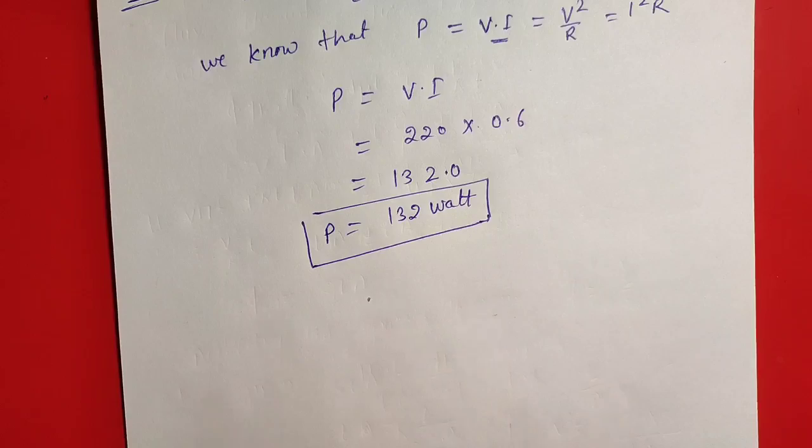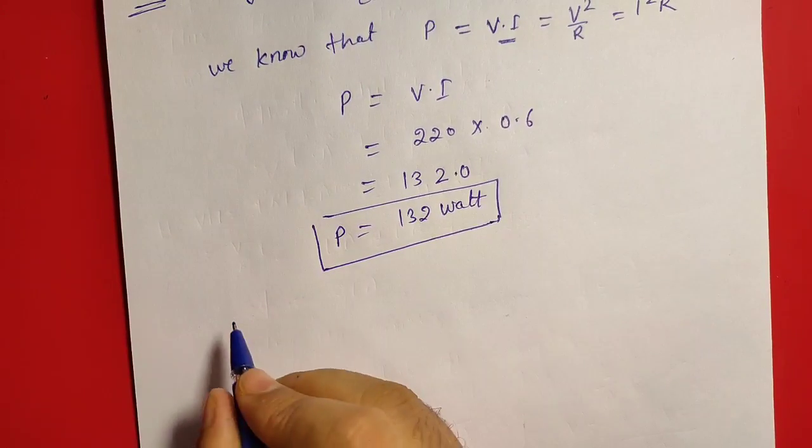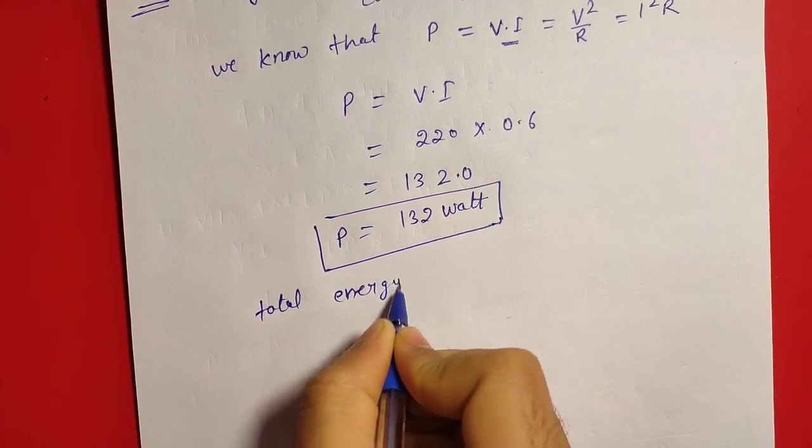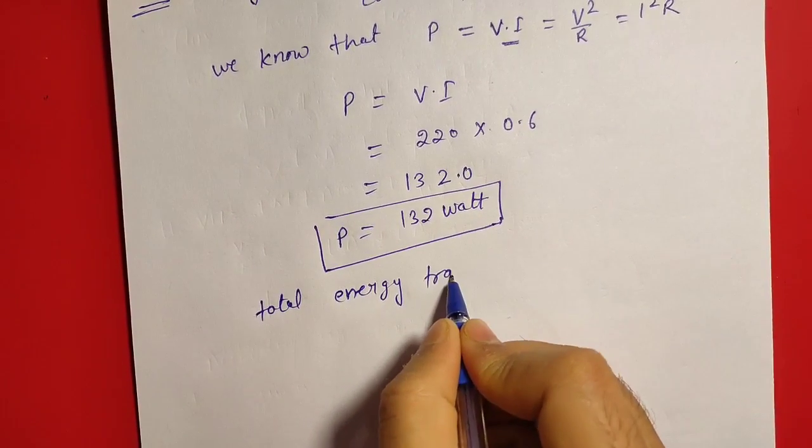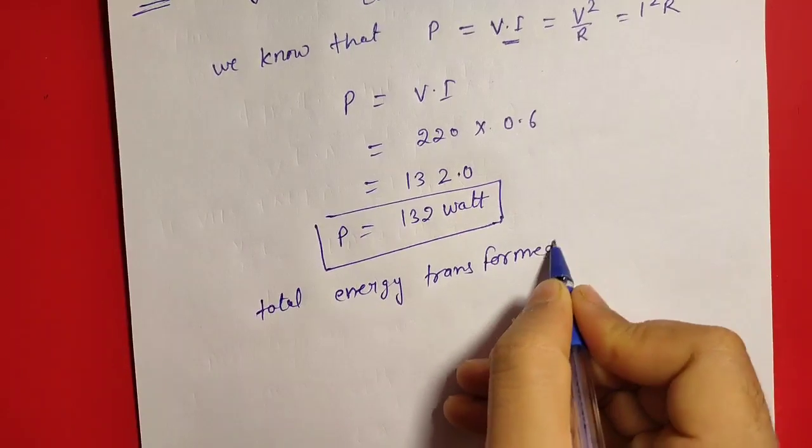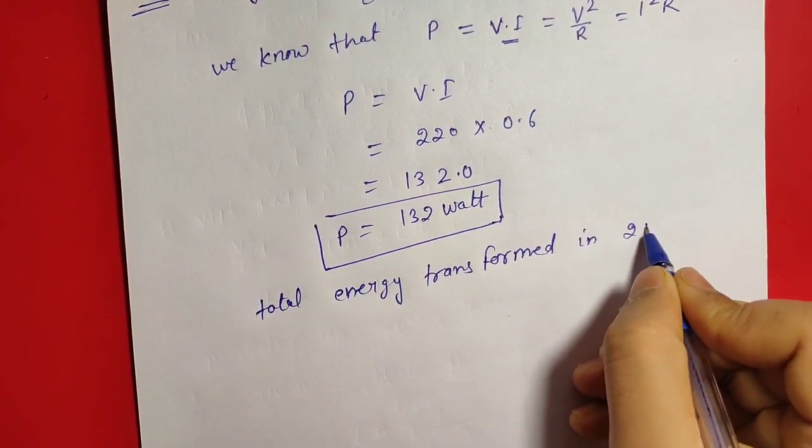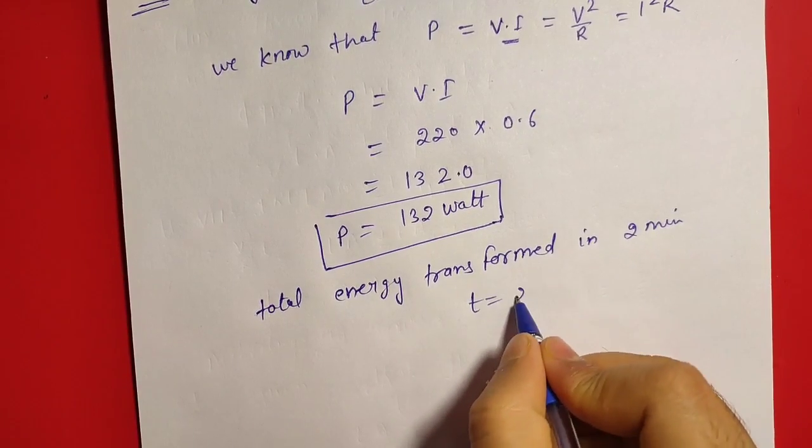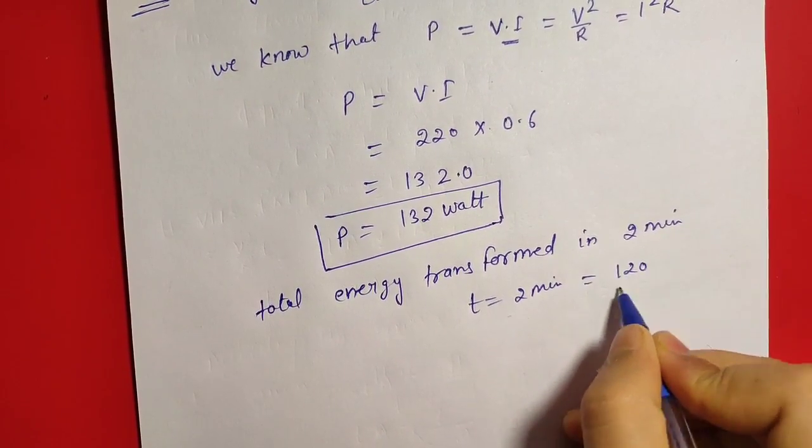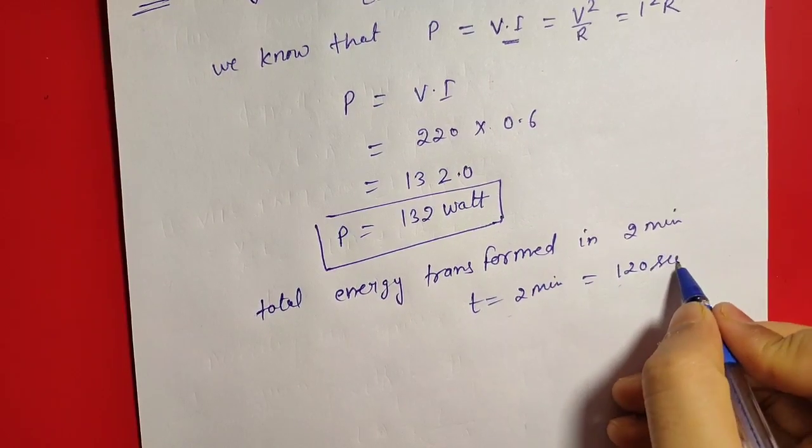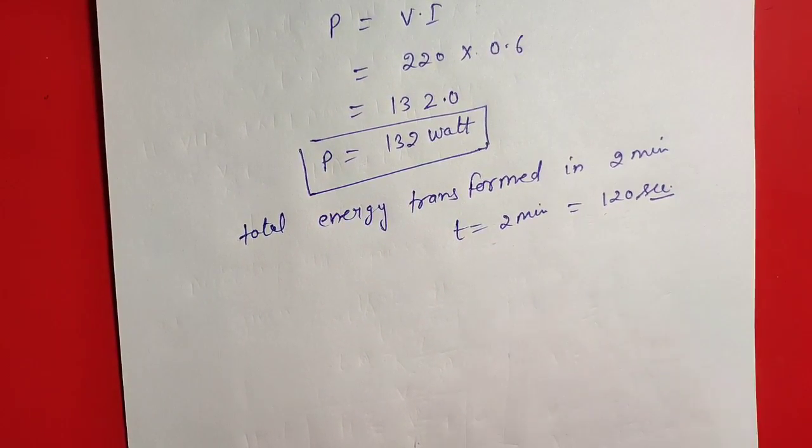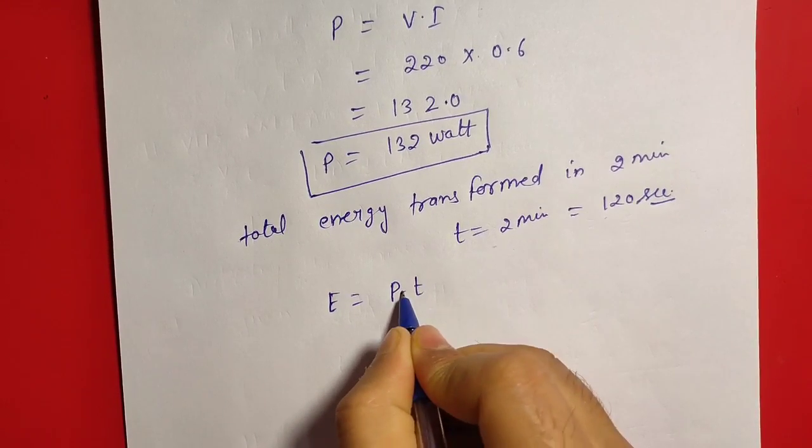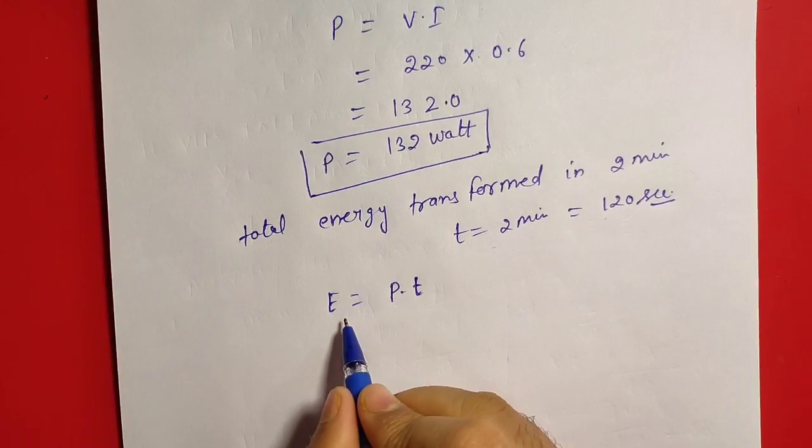Clear? Second, total energy transformed in two minutes that is equal to, two minutes hai. Minute ko convert karenge second mein, that is equal to 120 second.